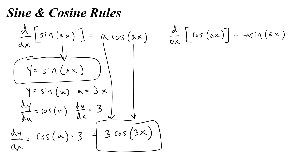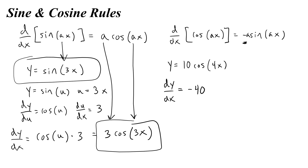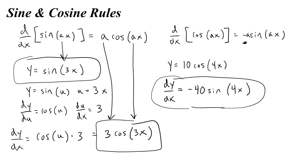Let's do another example: y equals 10 cosine of 4x. Using the equation directly, the derivative of y with respect to x is 10 times 4, so 40, and it's going to be negative sine — so negative 40 sine of 4x. That is how you take the derivative of cosine.